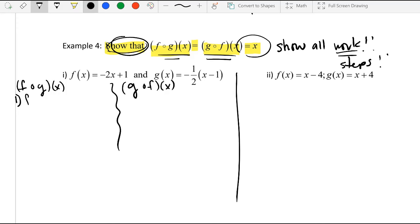Alright, so step one. By definition, f of g of x is identical to f composed of g of x. Two, f of g of x is this piece over here, so I'm going to write negative 1 over 2 times x minus 1. Close that up. And do not do two steps on one. Just write every single thing out.